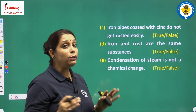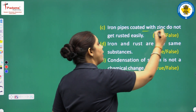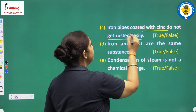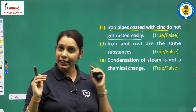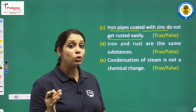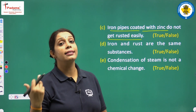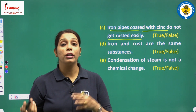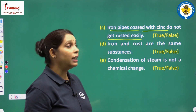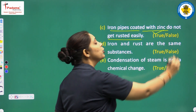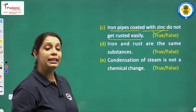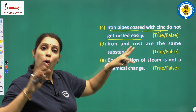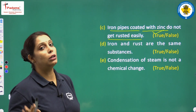Next: iron pipes coated with zinc do not get rusted easily. This is totally correct. This process is known as galvanization — zinc is more reactive and it protects iron from coming in contact with air. So this statement is true. You only have to correct the false statements, not the true ones.